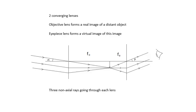Basically what happens is the objective lens forms a real image of a distant object, because we're looking at stars and planets and the moon and stuff. That's a distant object, it's far away. And you form a real inverted image of this distant object.